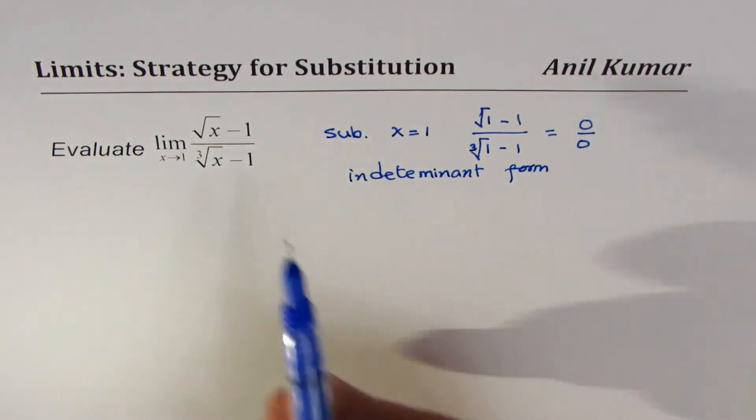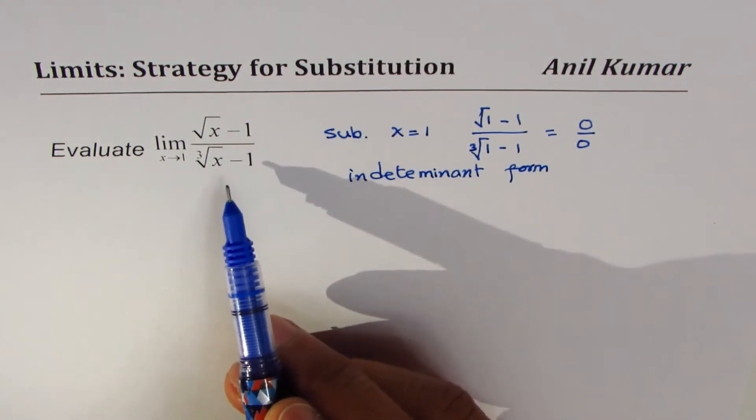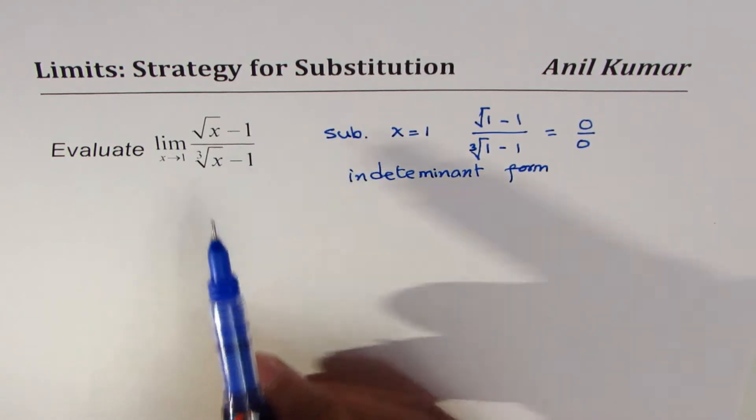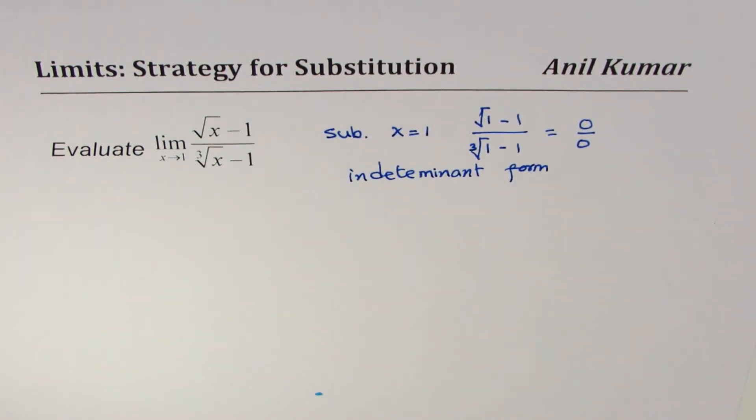Now this is indeterminate form. Whenever you have 0 over 0, we are clear that there is a common factor in numerator and denominator, and if we could cancel that out we could find the limit.